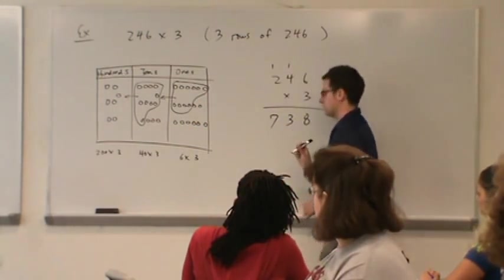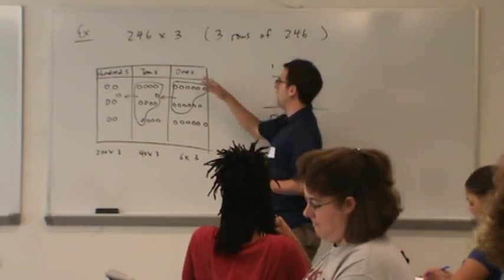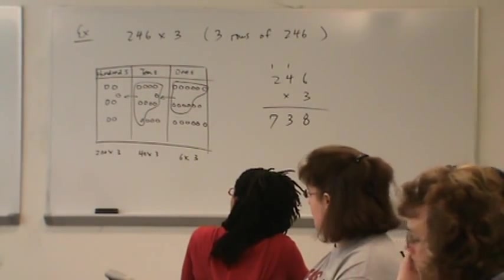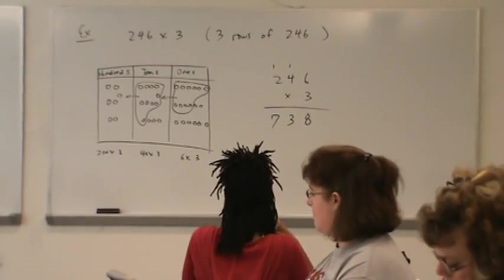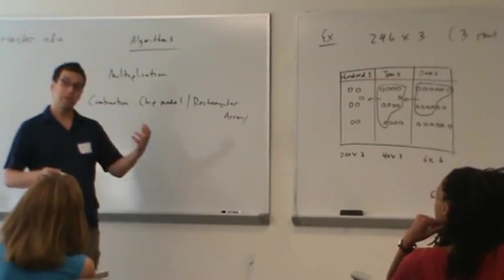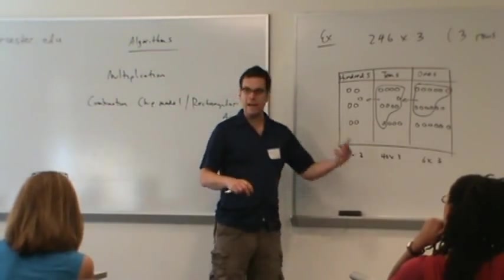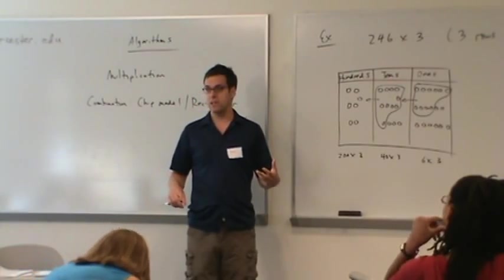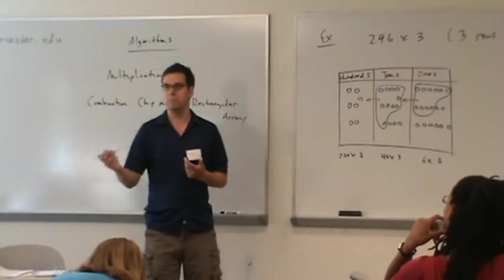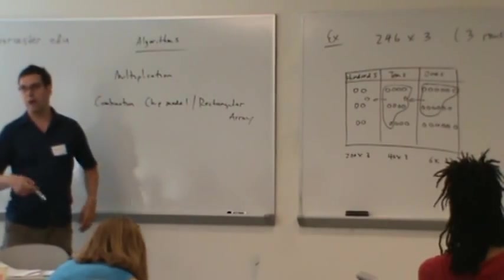Awesome. So the only really new thing here was thinking of multiplication as rows of. This is why models are so useful. For a lot of different types of problems, you can choose an interpretation or a model that really clearly illustrates what you're talking about. We did this with the subtraction chip model. It really helped for us to think of it as a take-away, as subtraction being a take-away. And when we thought about subtraction as take-away, we're crossing off chips that make perfect sense. It helps to think of multiplication in this context as rectangular array rows of.